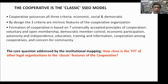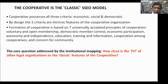In the classification for the Philippines, we consider the cooperative as the classic model of SSE organization, because the cooperative possesses all three criteria: economic, social, and democratic. By design, these three criteria are intrinsic features of cooperative organizations. The formation of a cooperative is based on the seven universally accepted principles of cooperation: voluntary and open membership, democratic member control, economic participation, autonomy and independence, education, training and information, cooperation among cooperatives, and concern for community. The core question for institutional mapping is how close is the fit of other legal organizations to the classic features of the cooperative.